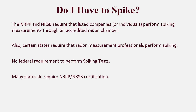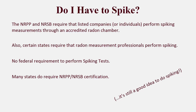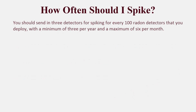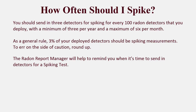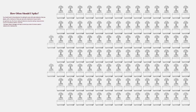Nevertheless, most radon measurement professionals are either NRPP or NRSB listed, and this is required by many states. Even if your state doesn't require certification or have spiking requirements, it's still a good idea to consider performing one. You should send in three detectors for spiking for every 100 radon detectors that you deploy, with a minimum of three per year and a maximum of six per month. As a general rule, 3% of your deployed detectors should be spiking measurements — round up. In those 100 detectors, three should be spikes, five should be blanks, and at least ten should be duplicates.